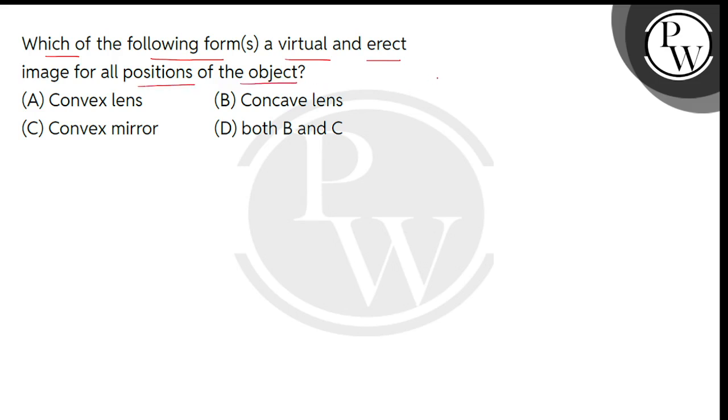Children, we have to consider all positions of the object. Now, what do we mean by all positions? Suppose you can use an optical instrument, like a convex lens. You can draw the principal axis and mark the optical center.